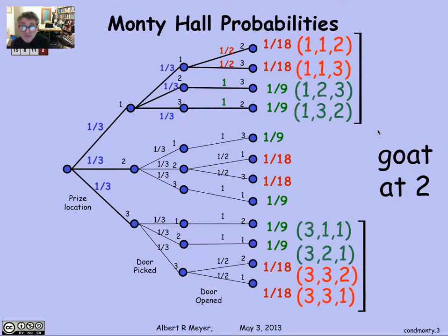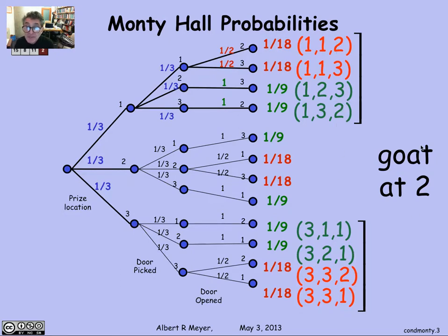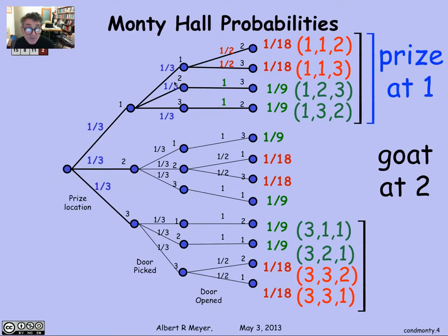Let's look at the event that the goat is at door 2. This is the branch where the prize is at 2, so in all the other branches the goat is at 2, which means we have eight of the 12 outcomes in the event 'goat is at 2.' Let's also look at the event that the prize is at 1 — that's just this branch of the tree.